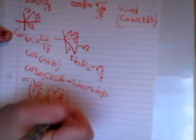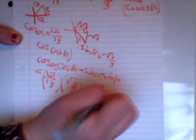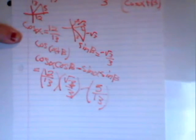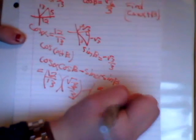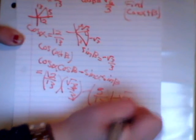And minus the sine alpha, which was given to us, 5 over 13. And the sine beta, which we found, which was negative square root of 3, all over 3.